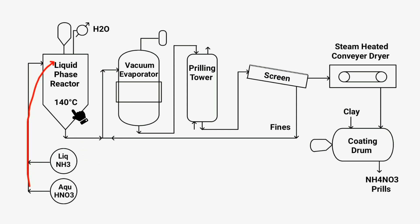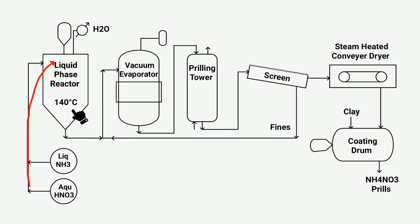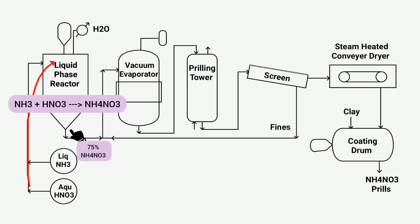The temperature inside the liquid phase reactor is maintained at approximately 140 degrees Celsius throughout the process. This temperature causes water to boil during the reaction and exit the top section of the reactor. The reactor is equipped with an agitator which facilitates the mixing of ammonia and nitric acid. When they react, a salt solution is formed which contains about 75 percent ammonium nitrate. This reaction is exothermic.